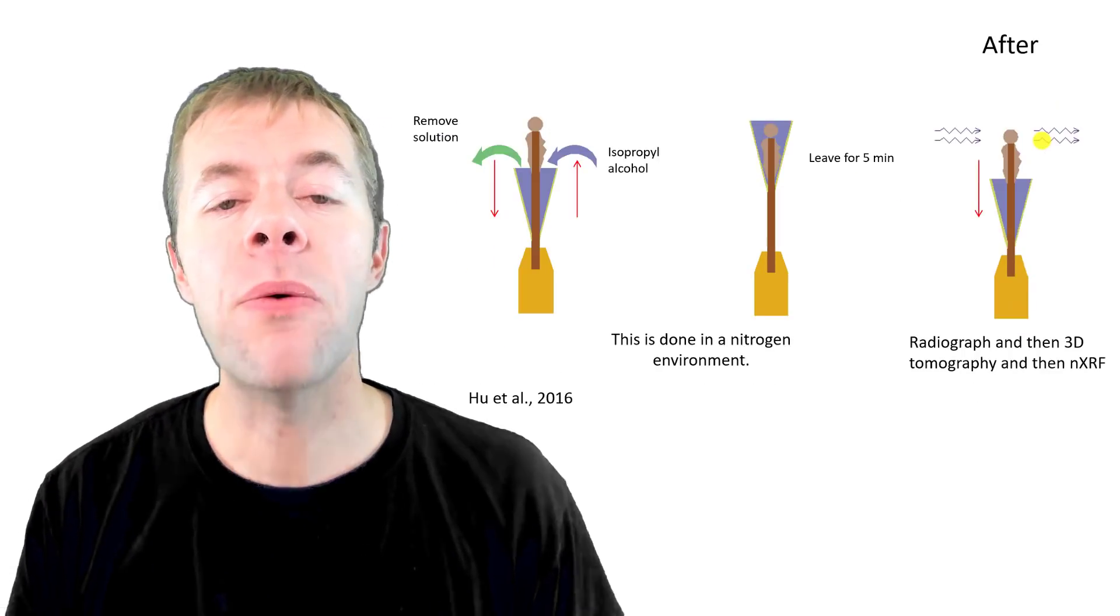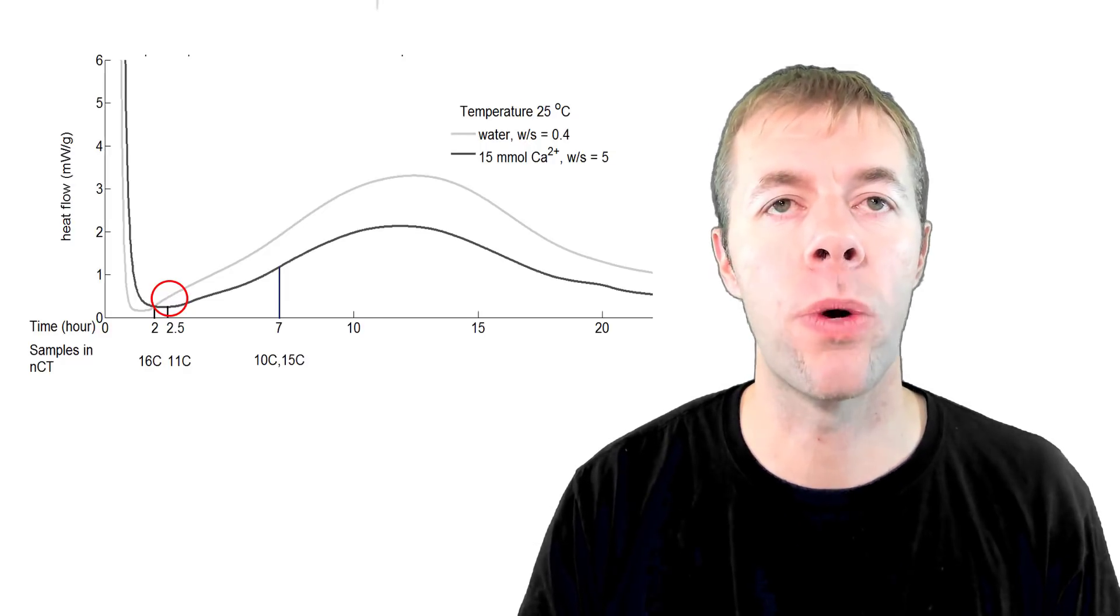We'll actually lock everything up in a nitrogen environment as well so we don't have any carbonation occur. And then we're going to remove it down, take the solution out, add an isopropyl alcohol and move it back up. And that's to stop reaction. That's to pull all the water out. Then we're going to move the isopropyl down and take another 3D image. So we have a 3D image before, and then we have a 3D image after hydration has occurred.